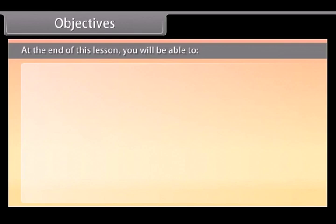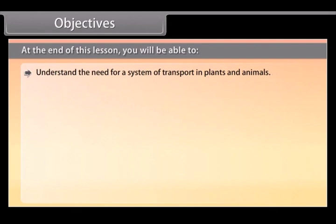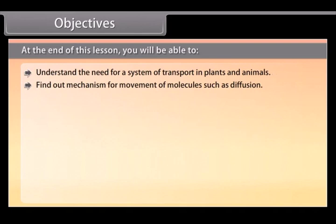Objectives. At the end of this lesson you will be able to understand the need for a system of transport in plants and animals, find out mechanism for movement of molecules such as diffusion, understand osmosis and active transport.